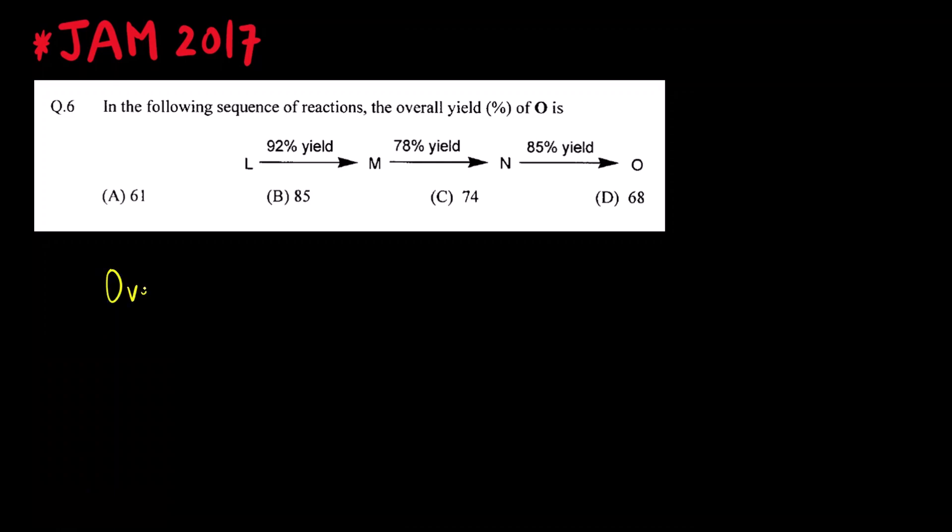So how do you calculate the overall percentage yield? Overall percentage yield is equal to - what you have to do is multiply all the percent yields of the steps that are given in fraction.